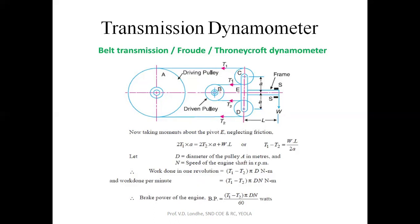Here there are two idler pulleys — one is the driving pulley and another is the driven pulley. The driving pulley is attached to the engine output shaft whose brake power we are going to measure. A continuous belt is supplied over these two idler pulleys as well as the driven pulley, from where we get the output. The difference in tension in the belt system will directly give the brake power of the engine, and here the power is not lost — it is utilized for driving another system through the driven pulley.